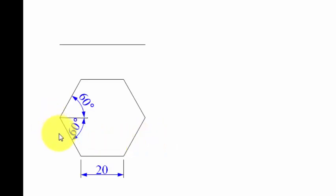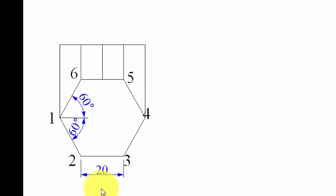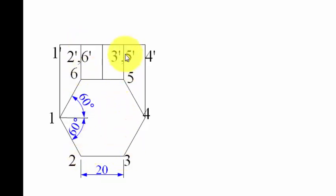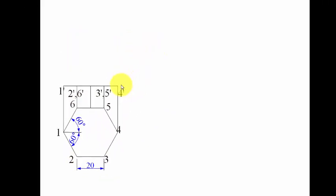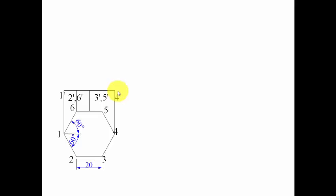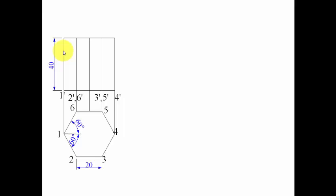Now there are 6 corners — let's name them 1, 2, 3, 4, 5, 6. The next thing is to look at this hexagonal prism from the front. This is how it would look, and these are the points: 1 dash, 2 dash, 6 dash, 3 dash, 5 dash, and 4 dash. The height of this hexagonal prism has been given as 40mm, so we are going to go upward by 40mm. This is what you call the front view.